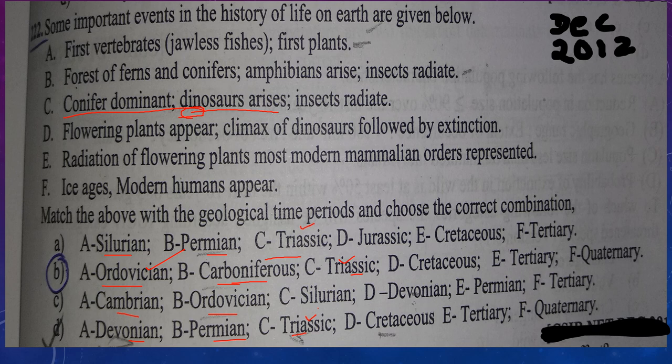Next, statement D: flowering plants appear, climax of dinosaurs followed by extinction. Extinction of dinosaurs and angiosperms — that is flowering plants — appear in Cretaceous. Looking at the options: option A gives D as Jurassic — not correct, since dinosaurs are dominant but not extinct in Jurassic. Option B gives Cretaceous — correct. Option C gives Devonian — not correct. Option D gives Cretaceous — correct. So options B and D have Cretaceous for statement D.